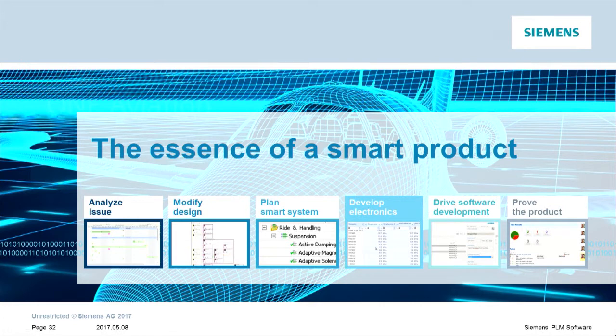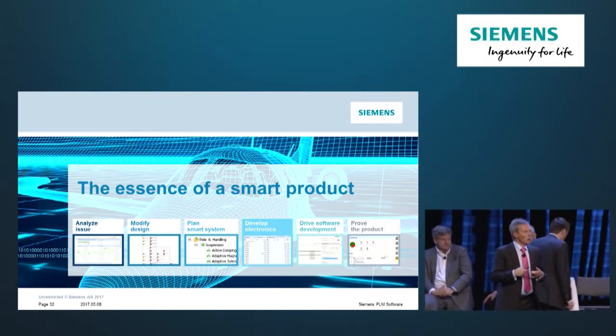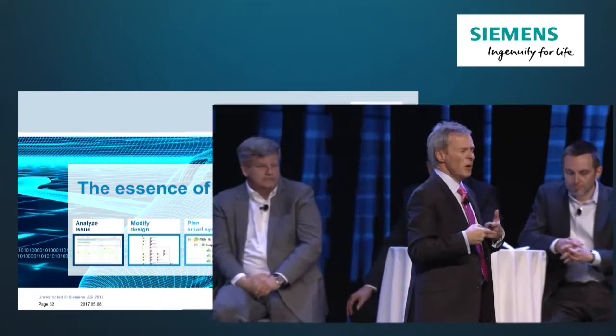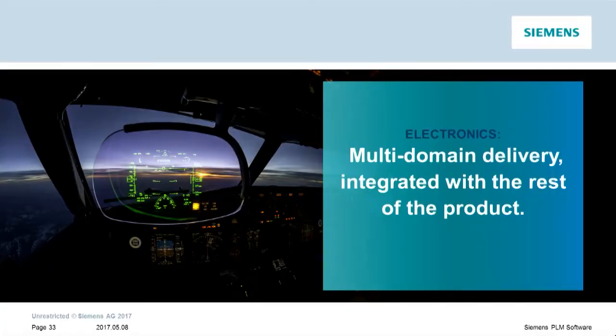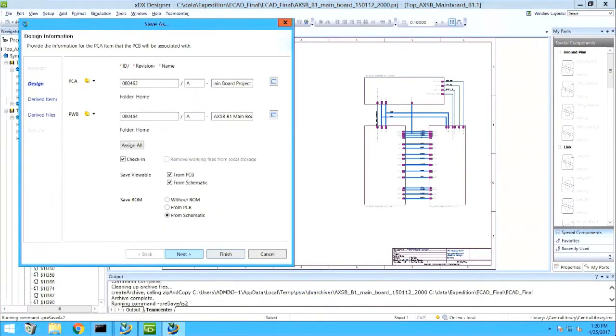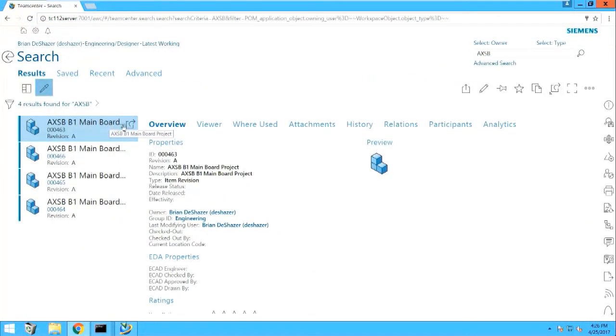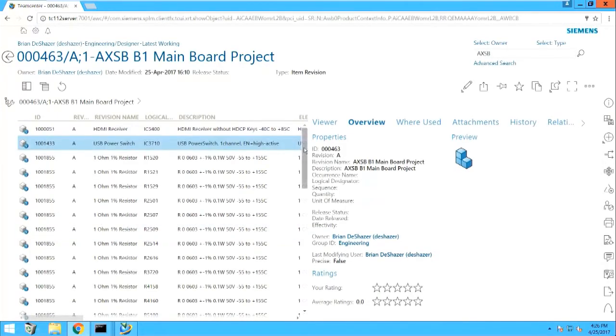Now that we've done some planning, let's get into the multi-domain implementation. The first place we're going to go is electronics. As Bill said, we also want to add some extra intelligence into the solution by adding extra sensors — a couple of accelerometers and an optical sensor that will actually sense if the door is not closed properly. We're integrating the different domains: the mechanical domain, the electronic domain, and the electrical domain — leveraging the integration already done with the Mentor products.